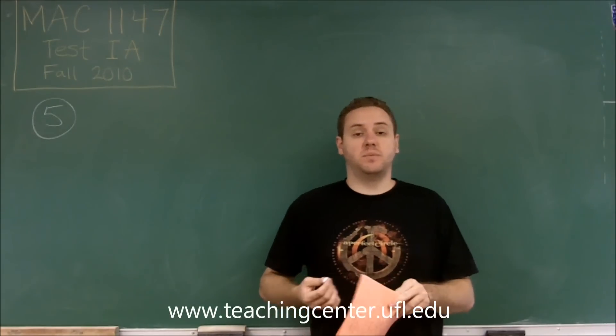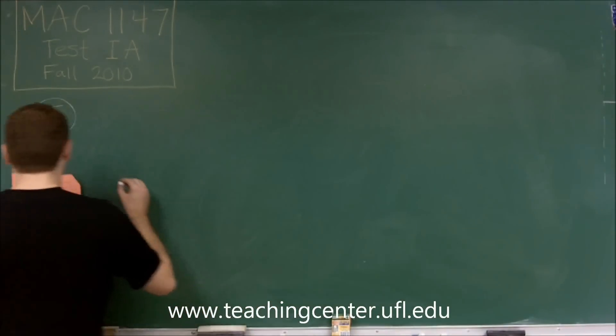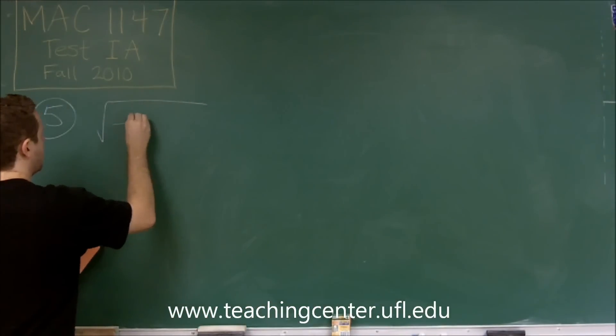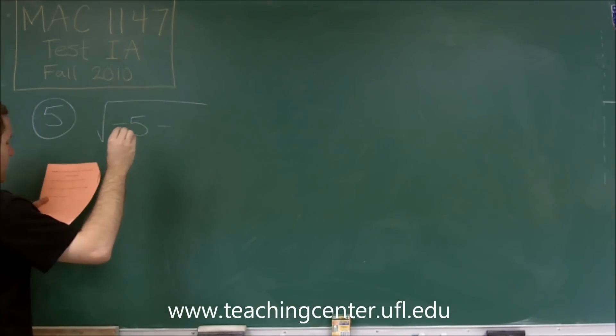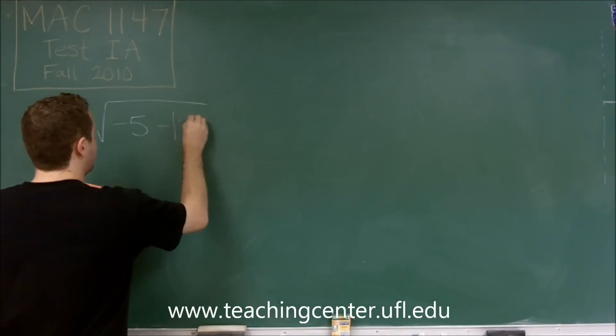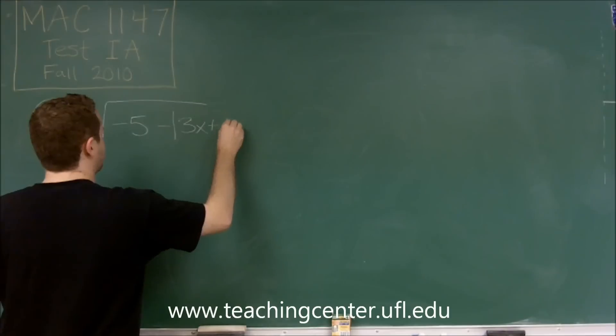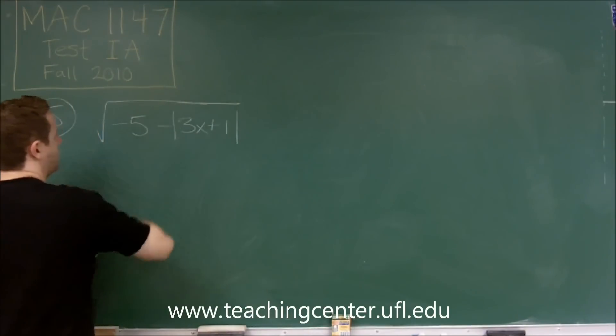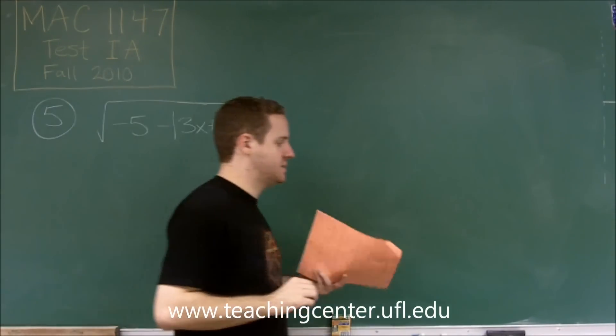For number 5, we're asked to find the domain of an expression. So our expression here is the square root of negative 5 minus the absolute value of 3x plus 1, all under the root there. We want to find the domain of this.